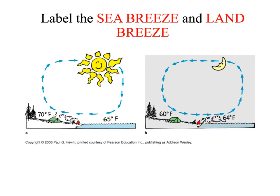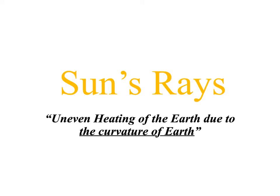Looking at these two graphics, on the left we have a sea breeze because it's coming from the sea, and on the right we have a land breeze because it's coming from the land. Winds are named for where they come from. Because there is a difference in how water heats up and land heats up, that gives us uneven heating of the Earth which affects the weather. Now we're going to talk about how the curvature — the shape of the Earth — causes uneven heating of the Earth.